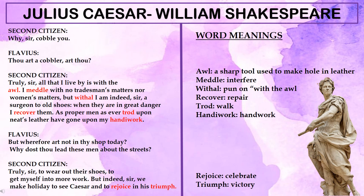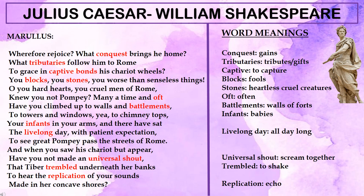Flavius then asks why the cobbler is not in his shop today. With humor, the second citizen says he is out so that more people wear out their shoes, giving him more customers. But then he admits the real reason: 'Indeed sir, we make holiday today to see Caesar and to rejoice in his triumph' — they are out on the streets to celebrate Julius Caesar's return and victory.